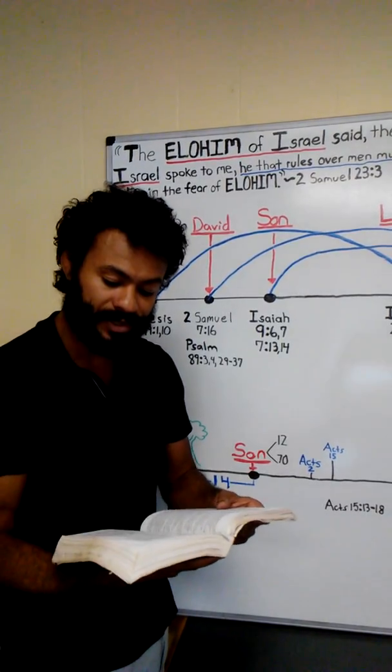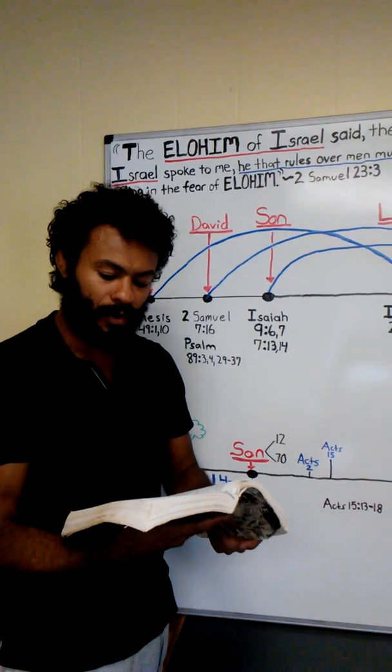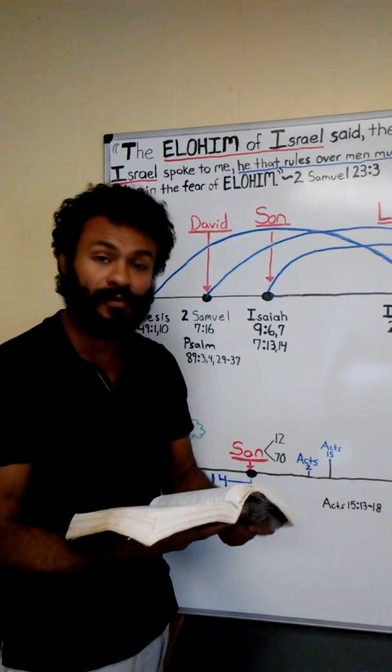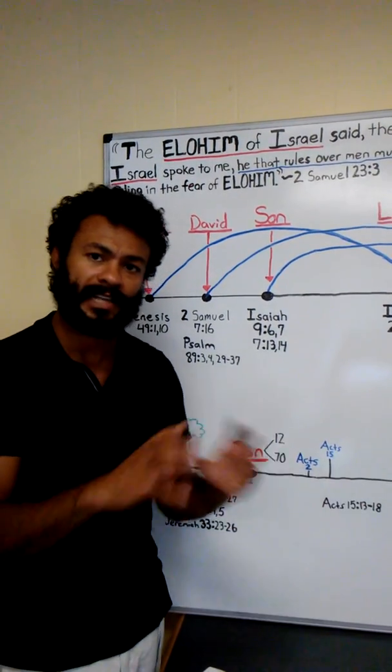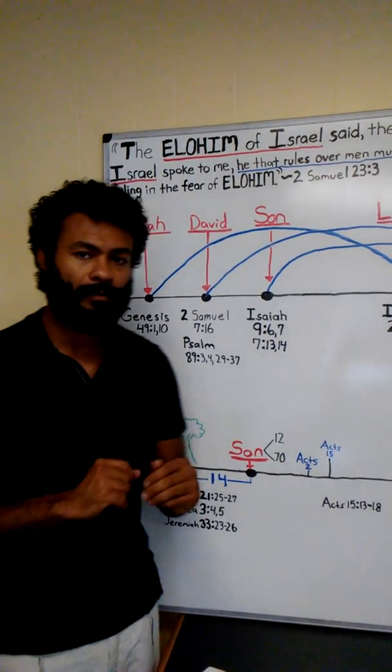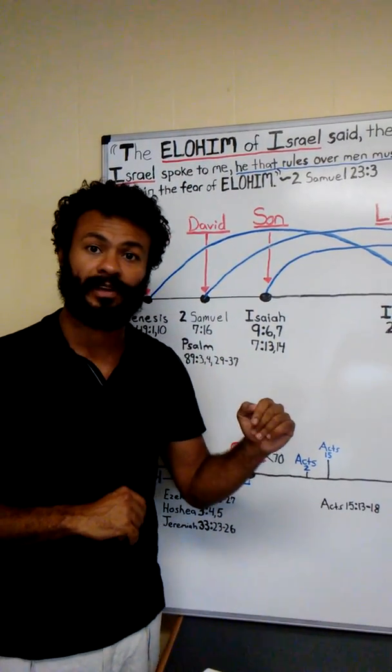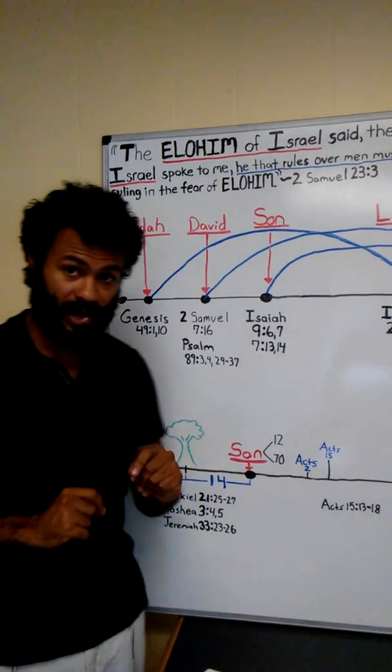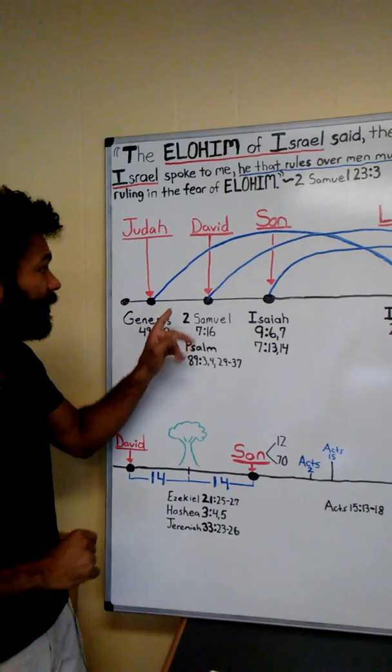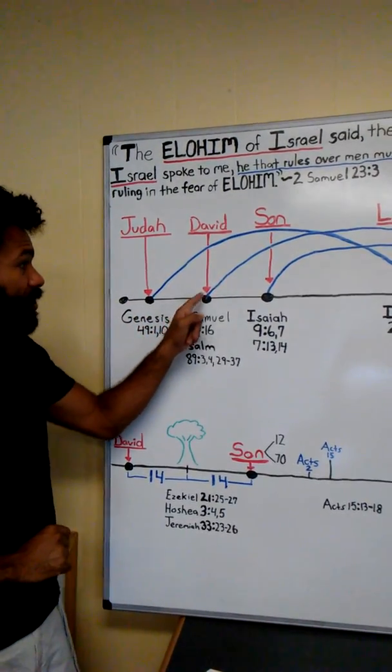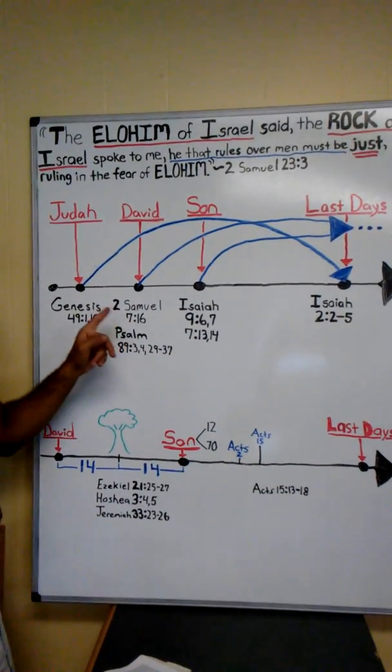2 Samuel chapter 7 verse 16: Your house and your reign are to be steadfast forever before you. Your throne is established forever. This is talking about David. You can read the whole chapter—we'll be talking about other aspects of this covenant. The key point is through David, there's a covenant that actually goes beyond the end days and goes on forever.